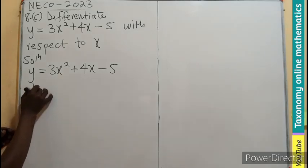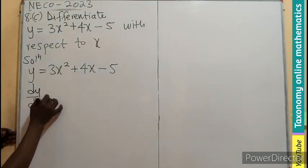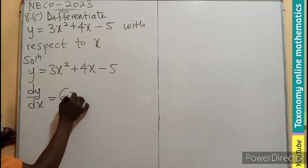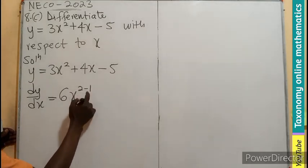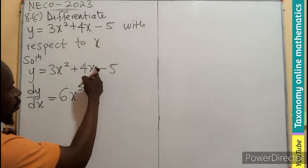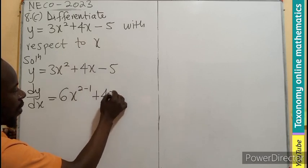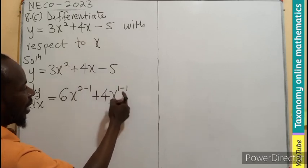So this becomes dy dx. This becomes 6x, 2 minus 1, plus 1 times 4, 4x, 1 minus 1.